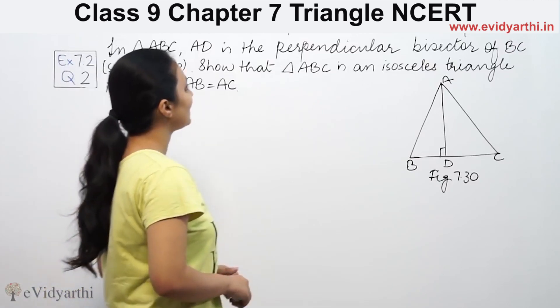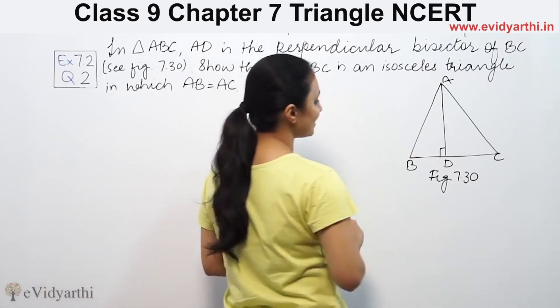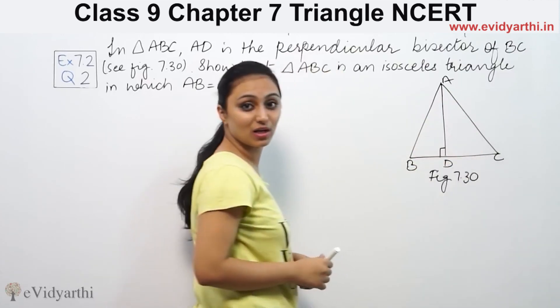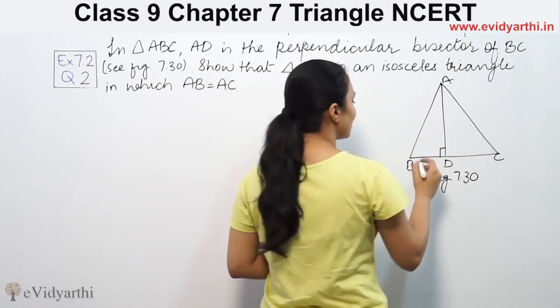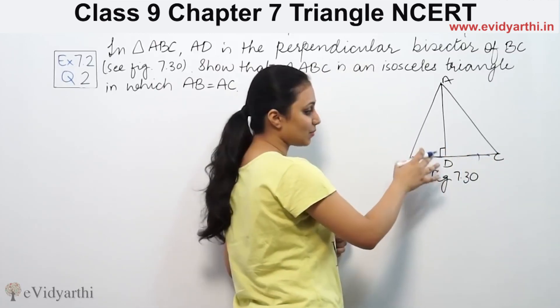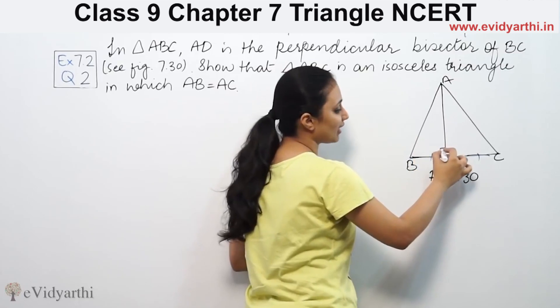This says in triangle ABC, AD is the perpendicular bisector of BC. In this ABC, AD is the perpendicular bisector of BC. That means this side will be divided equally and this angle is 90 degrees.